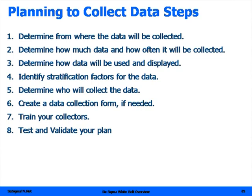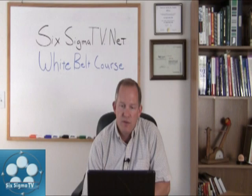Here are some steps for planning to collect data: Where's the data coming from? How much data and how often will be collected? How will the data be used and displayed? What are the stratification factors for the data? Who will collect it? Do we need a data collection form? We need to train our collectors and then test and validate our plan. That's a simple eight-step approach to ensure you collect the right, accurate, consistent, and meaningful data for process improvement.